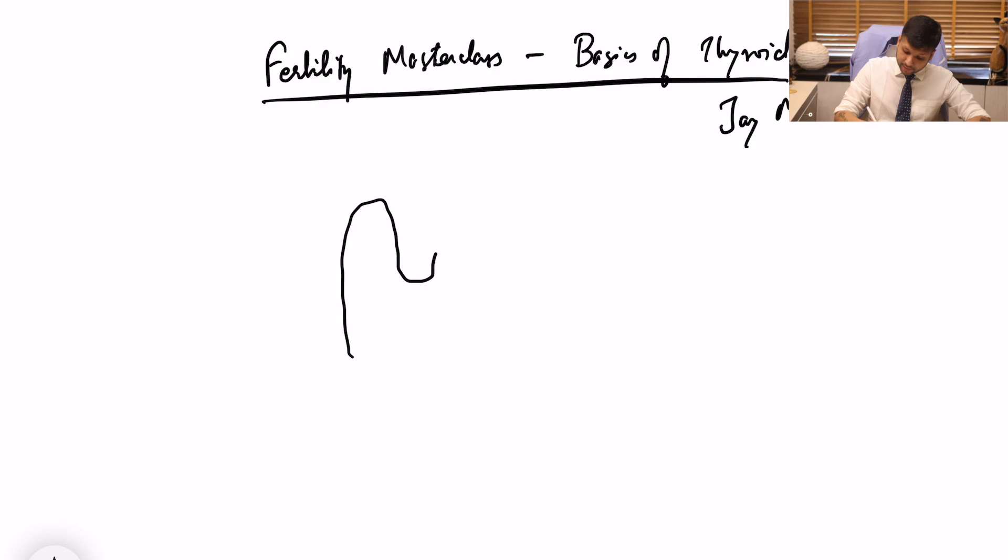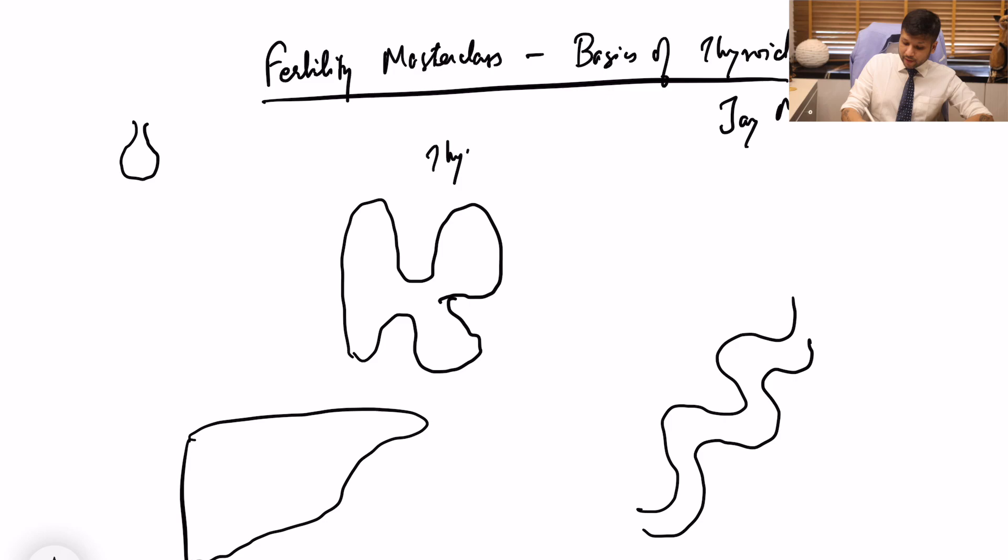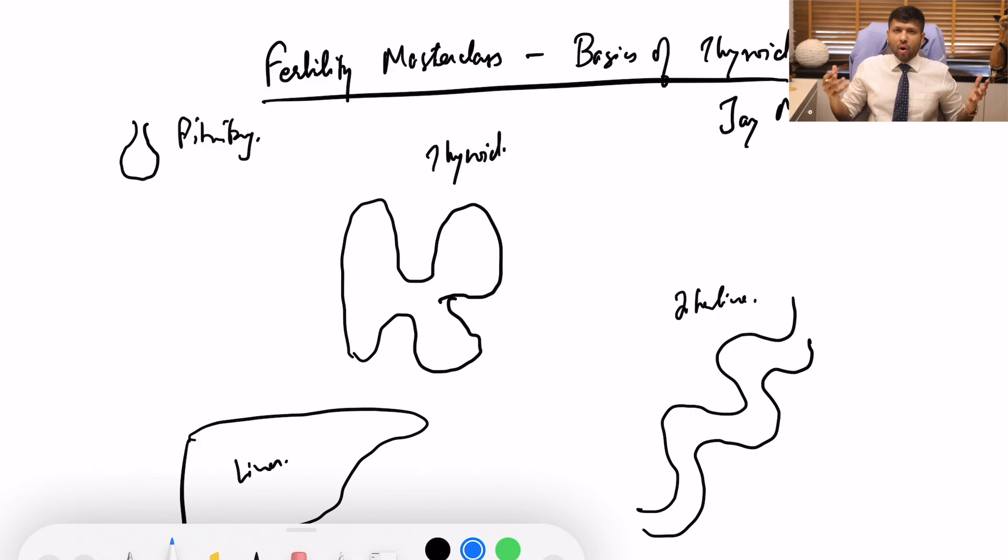So let me just draw the thyroid. Thyroid is something like this. It is present in the neck. We all know this is where we examine the thyroid. But when we want to discuss the basics of thyroid, there are three or four things which are very important for us. So I'm going to draw all of them. All of them have a significance. So this is our dear friend thyroid whom we are going to discuss. This is the pituitary which we all know. This is the intestine. And this is the liver. Now these four things are very important.